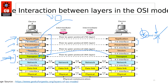When a data segment reaches from the Transport layer to the Network layer, the Network layer adds its own header which includes the IP address. Routers work at the Network layer and maintain a table of IP addresses to determine where to send packets. The segment is then converted into a packet at the Network layer.